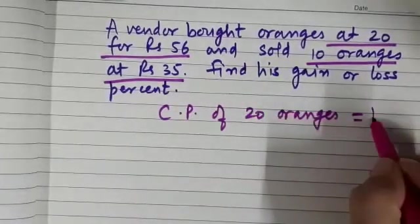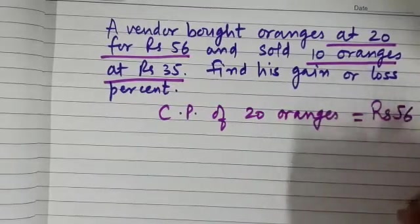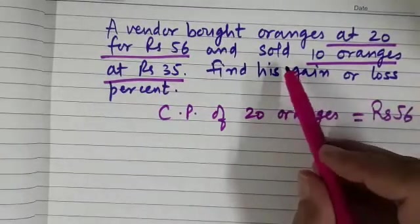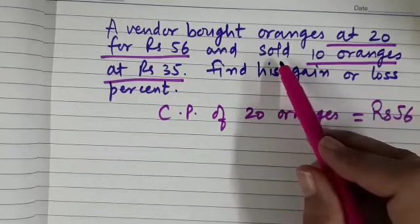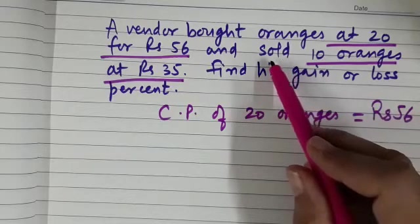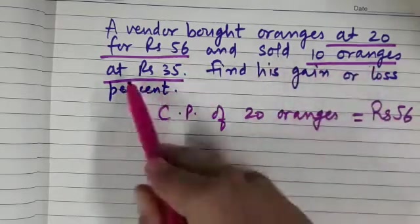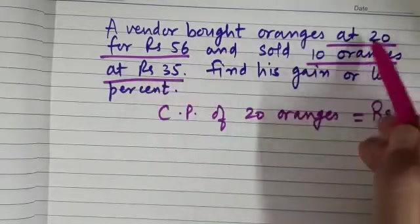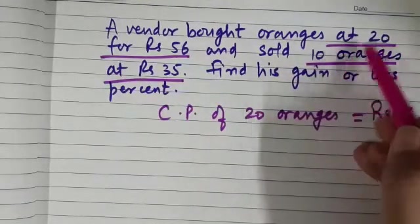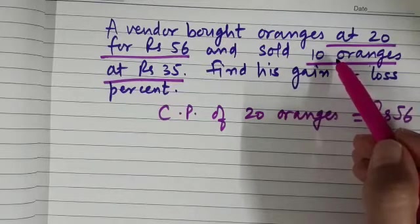CP of 20 oranges is given to be rupees 56. Now if we read the question, it is given that he sold 10 oranges at rupees 35. You see that the number of oranges in both situations is different.